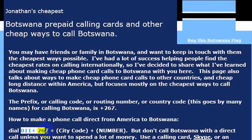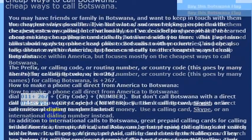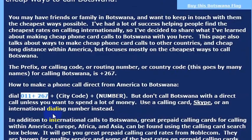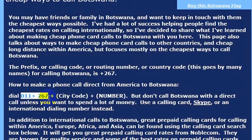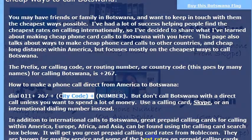To call Botswana, all you would do is dial 011 plus 267. 267 is the country code for Botswana, so you would dial 011 plus 267 plus the city code, whatever city you're calling in Botswana, and then the number.